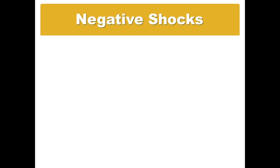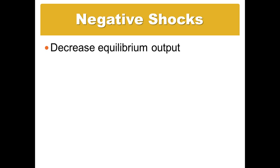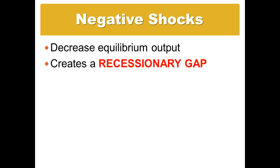When it comes to negative shocks, we see a decrease in equilibrium from potential output to actual short-run output. Those differences are what we call a recessionary gap. When the economy is less than full employment, we are in a recession. We have cyclical unemployment, and we talk about the difference between our actual output and potential output as being a recessionary gap.